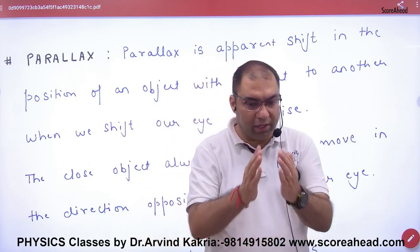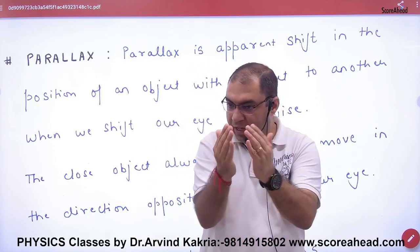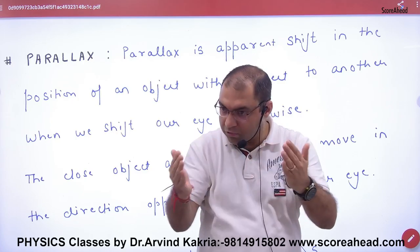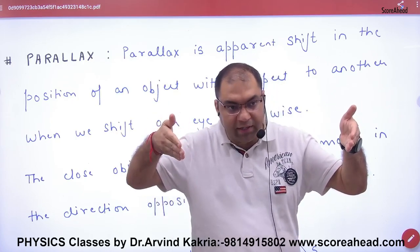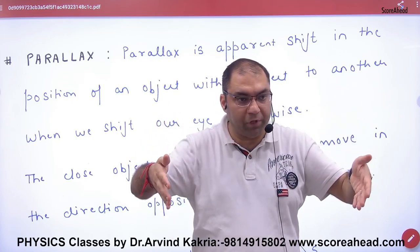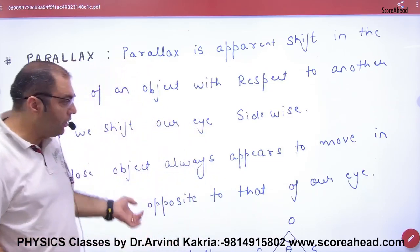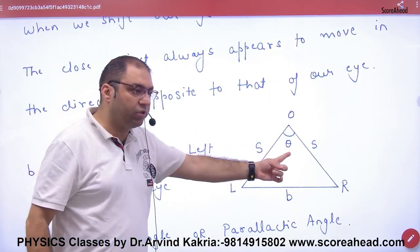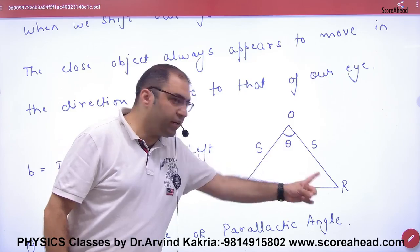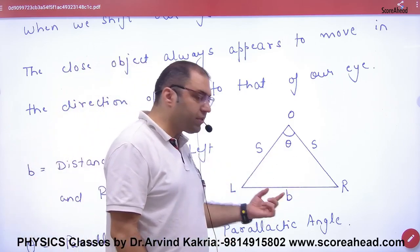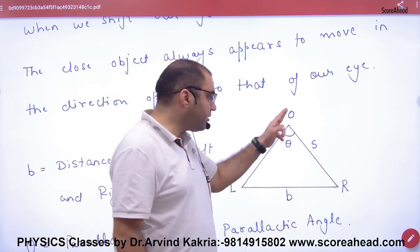So parallax is nothing complicated - there are two points of view so it has two different frames. Left is different and right is different, it is called parallax angle. This is my left eye, this is my right eye, and the distance between both eyes is b, so this is the distance of the object.